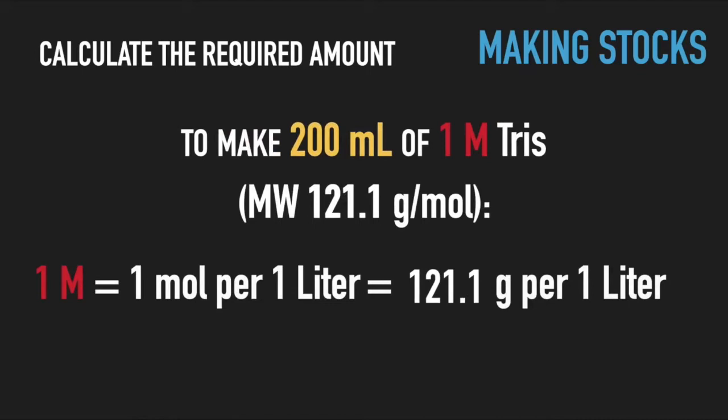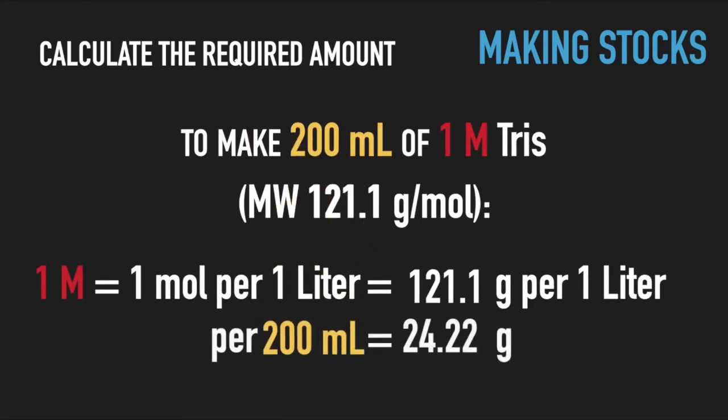200 milliliters, therefore, contains 5 times less — that is, 24.22 grams. That is the amount of TRIS powder you need to weigh out.